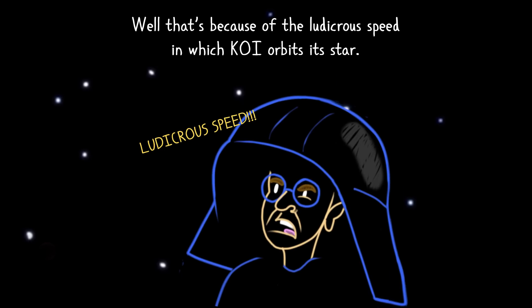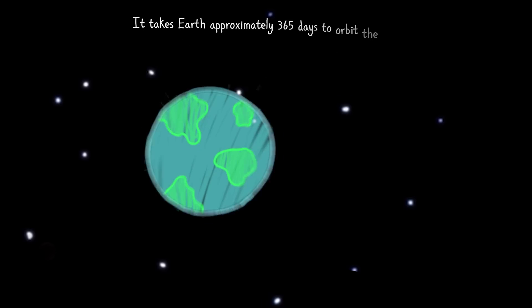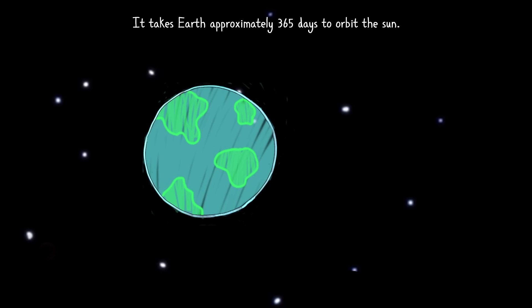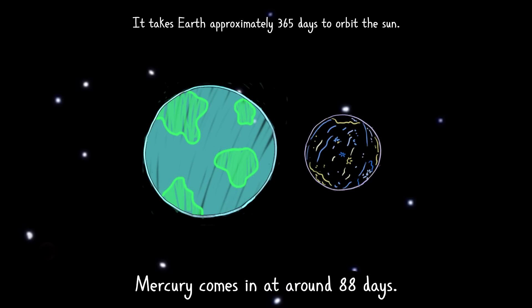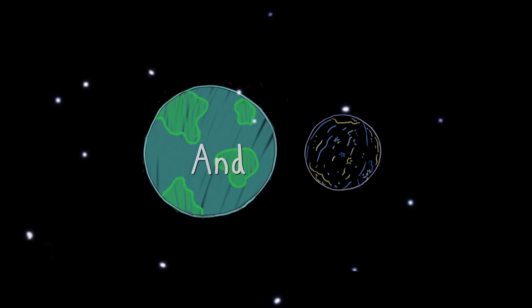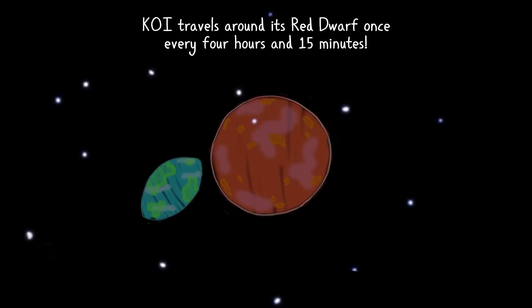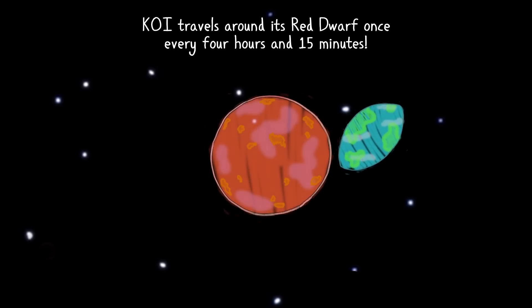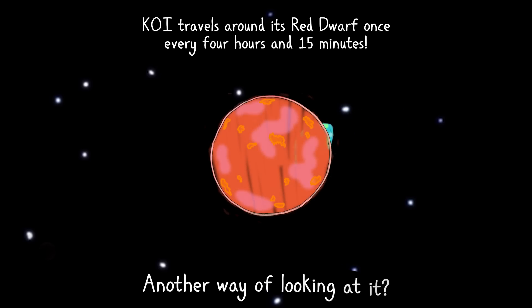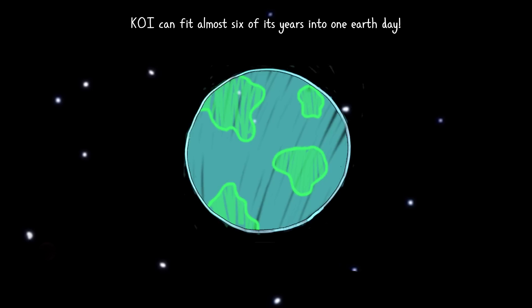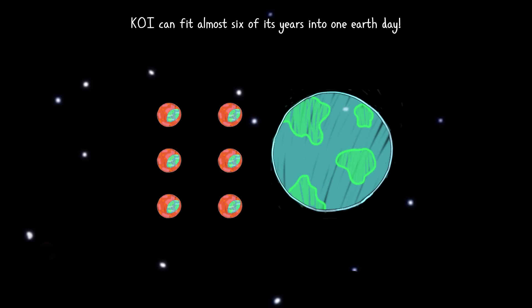Well, that's because of the ludicrous speed in which KOI orbits its star. It takes Earth approximately 365 days to orbit the Sun. Mercury comes in at around 88 days. And KOI? KOI travels around its red dwarf once every 4 hours and 15 minutes. Another way of looking at it? KOI can fit almost 6 of its years into one Earth's day.